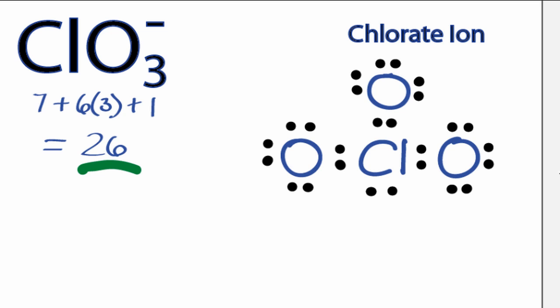However, chlorine is in period 3 of the periodic table, which means it can often hold more than 8 valence electrons, so we need to check our formal charges.